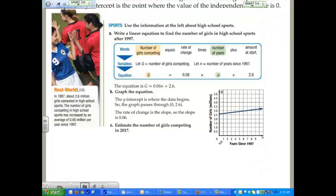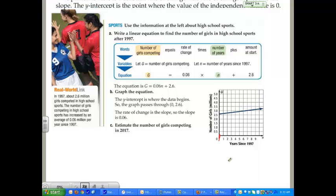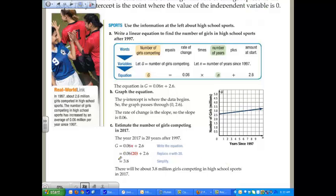We'll estimate the girls competing in 2017. You start at the 0 year of 1997. 2017 is 20 years after 1997, so all you have to do is take your equation, put 20 years in for your n value, and multiply it out. You would find that about 3.8 million girls will be competing in high school sports in the year 2017. That's assuming of course that there's the same rate of change throughout that time period.